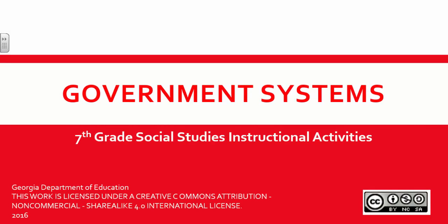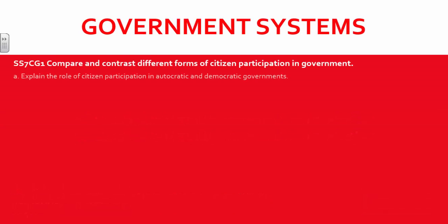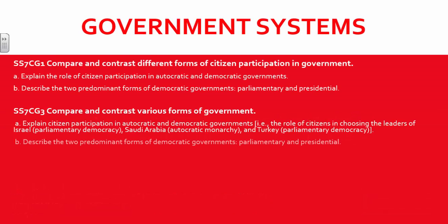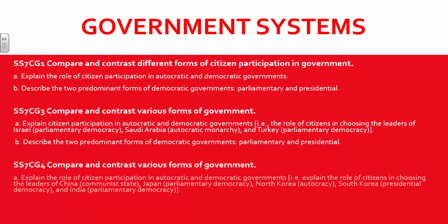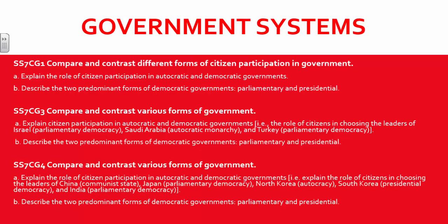Welcome! Today we will look at some teaching techniques that can be used to teach civics and government standards, focusing on the different types of economic systems. Standards Social Studies Grade 7, Civics and Governments 1, 3, and 4 all focus on citizen participation in autocratic and democratic governments. There is also a focus on the two types of democracy: parliamentary and presidential.